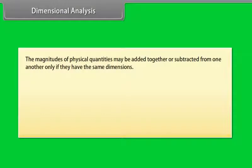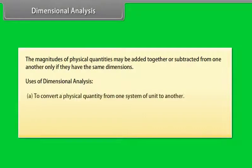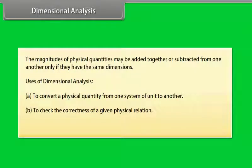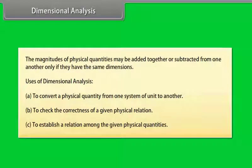Dimensional Analysis: The magnitudes of physical quantities may be added together or subtracted from one another only if they have the same dimensions. Uses: Dimensional analysis can be used to convert a physical quantity from one system of unit to another, to check the correctness of a given physical relation, and to establish a relation among the given physical quantities.